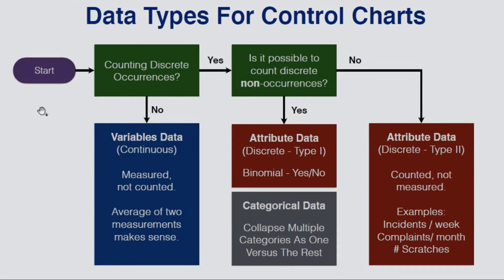Now let's look at the data types for control charts. This is the algorithm to determine data types. We have two types: continuous data, also known as variables data, and discrete data, also known as attribute data. We begin by asking: are we counting discrete occurrences? If the answer is no, then we have continuous data — we measure rather than count. Examples include temperature, length, breadth, and weight, where the average of two measurements also makes sense.